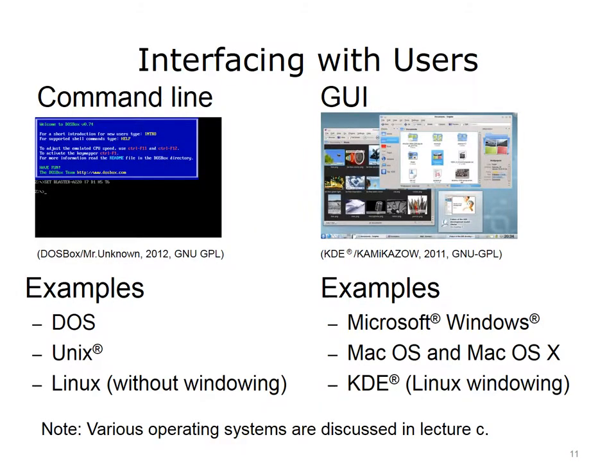Operating systems interface with users in several different ways. One way is through the command line. In this paradigm, the user types commands to interact with the OS. So instead of starting a program by clicking on an icon, the user would type the full path to and name of the program to get it to run. Some operating systems that use command lines are DOS, UNIX, and Linux.